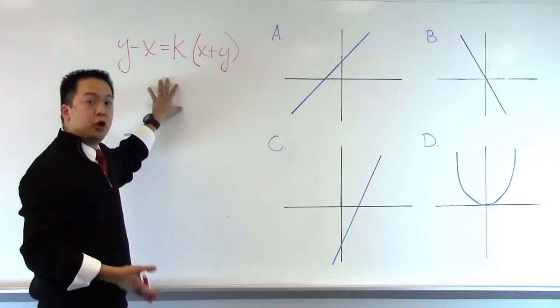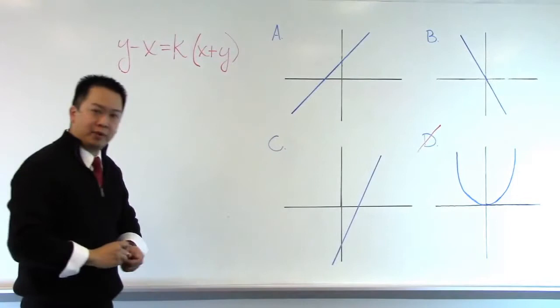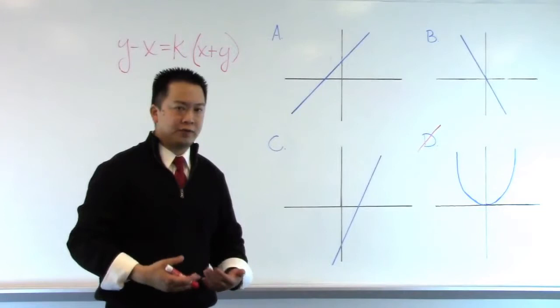Sure enough, answer choice D, we can eliminate, because it is a parabola. Therefore, at this point, we might be thinking, how will I start? Where am I going to start to solve this problem?